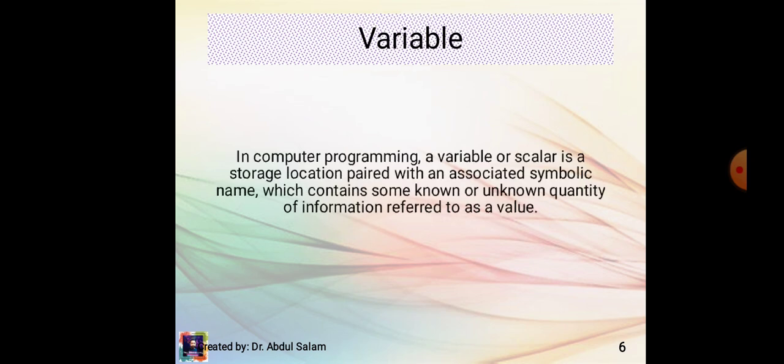What is a variable? In computer programming, a variable or scalar is a storage location paired with an associated symbolic name, which contains some known or unknown quantity of information referred to as a value.